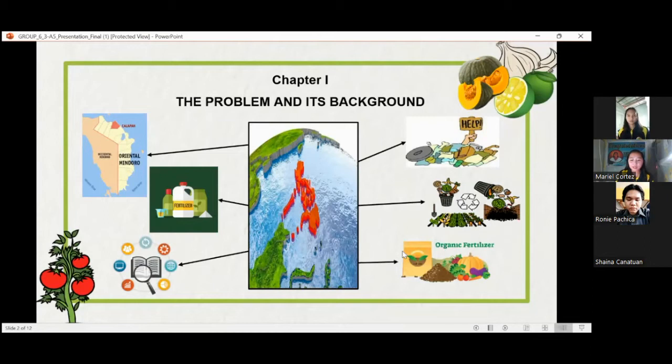Our study is designed to measure the tomato plant growth and yield using organic fertilizer as an effective tool for planting. This study is expected to benefit the following individuals and organizations: the crop growers, the agriculturists, the community, and the future researchers.